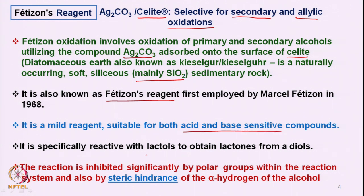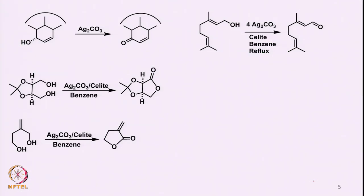Fetizon's reagent is especially useful for the conversion of lactols to lactones from diols. The reaction is inhibited significantly by polar groups within the reaction system and also by steric hindrance of the alpha-hydrogen of the alcohol. The reagent reacts faster with allylic or benzylic alcohols than with normal saturated alcohols, though the reaction does still take place with ordinary alcohols.